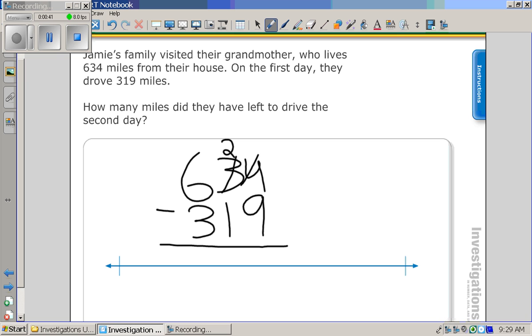So you cross out the 3 and put a 2, and then put a 14 on top of the 4, and then you do 14 minus 9, and that's 5.